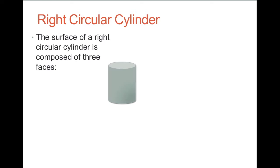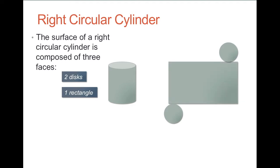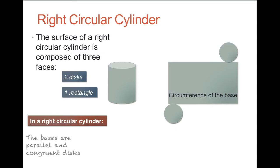In a right circular cylinder, it's composed of three faces: two discs and one rectangle. This is the circumference of the base. So the rule we deduce from this net.